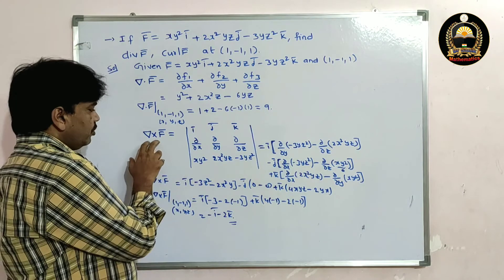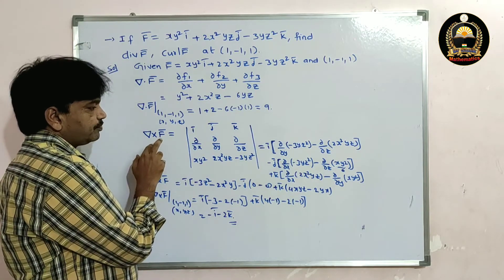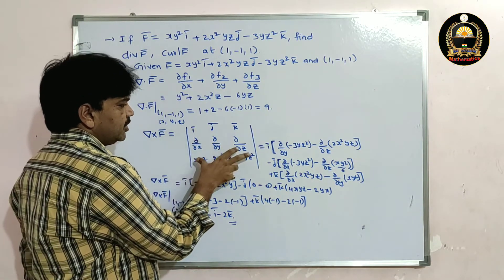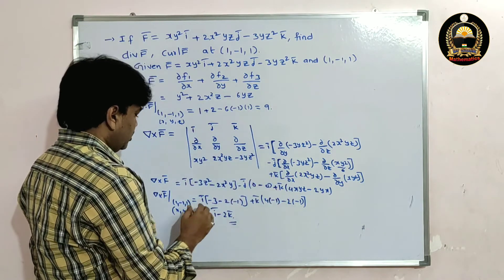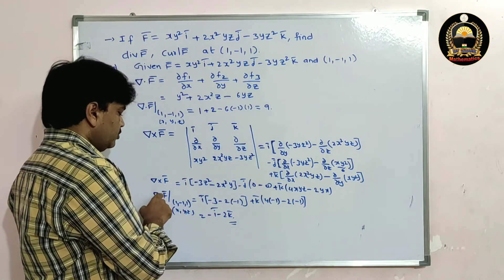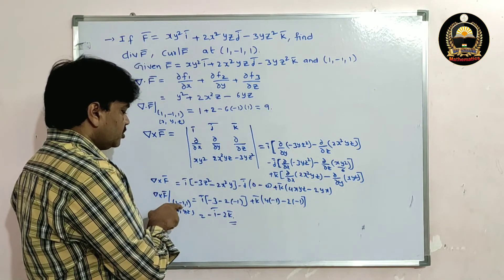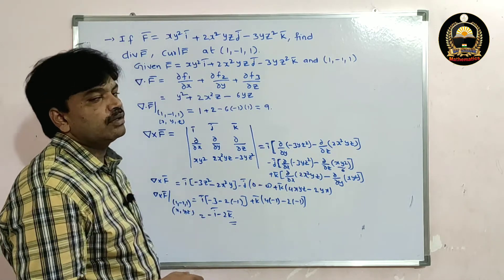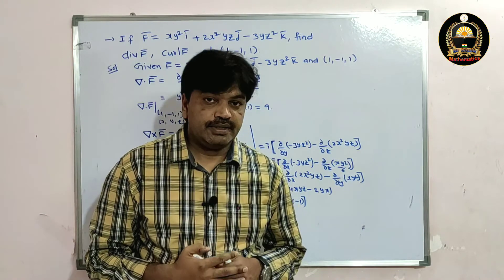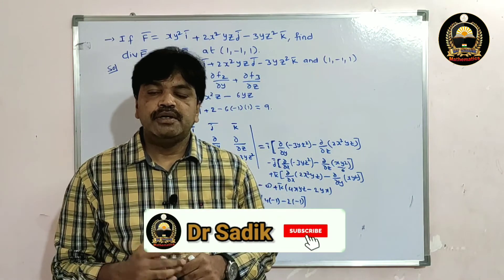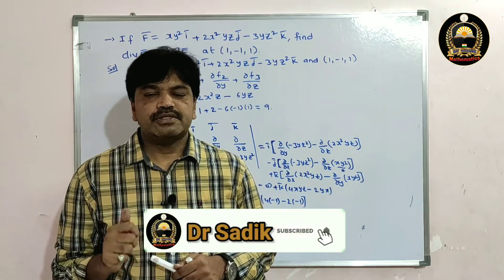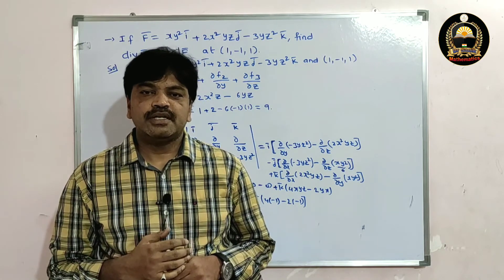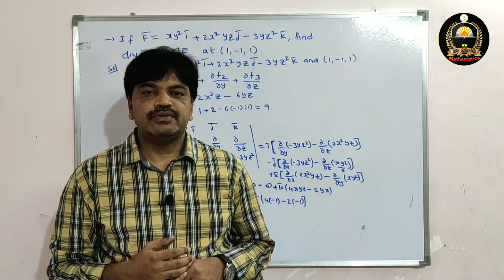Once again students, simply find del cross f̄ value by applying and expanding the determinant, then substituting the point to get the answer. Hope you understand. Please subscribe to this channel, like and share this video. Thank you for watching. Jai Hind.